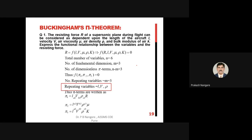The Pi theorem method is applied everywhere for finding solutions of complex problems. Here, the resistance force R of a supersonic plane during flight can be considered as dependent upon the length of the aircraft. So R is a function of l, v, mu, rho, and k. The total number of variables is six, and the number of fundamental dimensions is three, so the number of Pi terms is n minus m, which equals three.